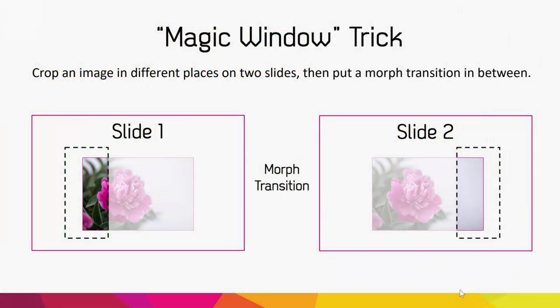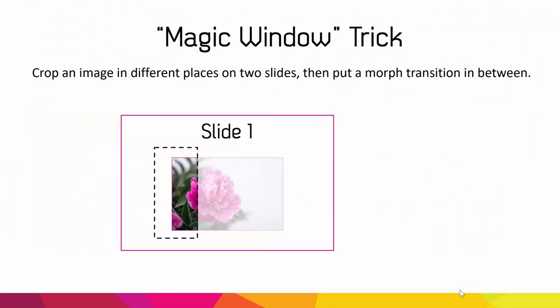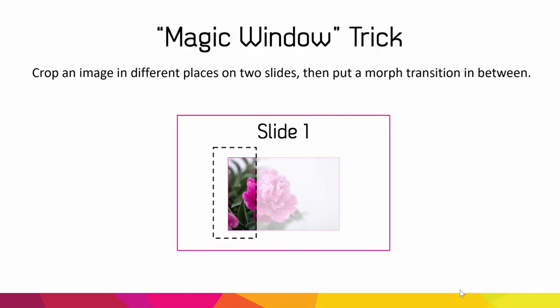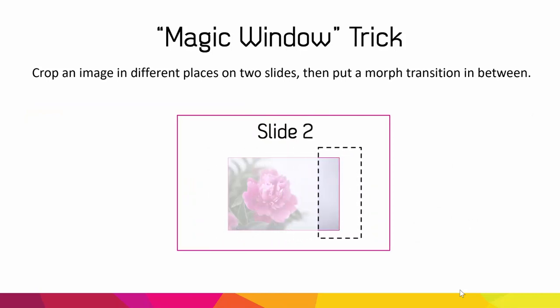The basic principle of the technique is that you are making two slides with a similar image on both, but cropped in different ways. Then you put a morph transition in between, and then the magic window scrolls smoothly between your crops.